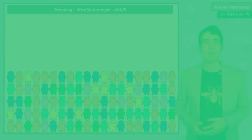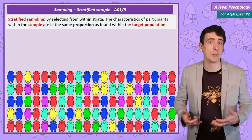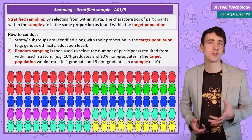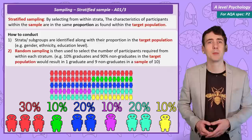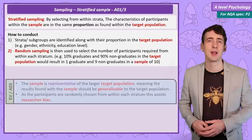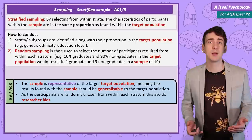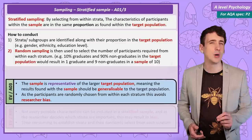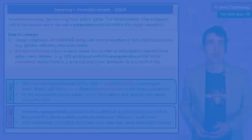A stratified sample is the most complex type of sample, but it tries to avoid some of the problems of the other methods. It creates a sample that is representative of the population as a whole. The researcher first identifies subgroups, or strata, and their proportion in the wider population. The sample is then made by randomly selecting participants from within each strata, so they're represented in the same proportion in the final sample. For example, if 10% of your population were university graduates, 10% of your sample would be university graduates. The big positive is the sample is representative of the larger population, meaning we can be confident in generalising findings. It also avoids researcher bias. However, the researcher does decide which strata are important, meaning there may be some bias in strata selection, and stratified sampling is time consuming and difficult.